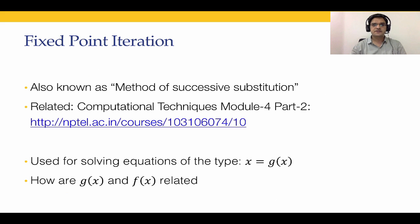Fixed point iteration is also known as the method of successive substitution — the reason for this will be clear shortly. A related module from the computational techniques course is module 4, lecture 2, which is the 10th lecture in that course. The fixed point iteration, instead of solving f(x) = 0, solves an equation of the form x = g(x).